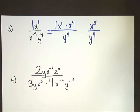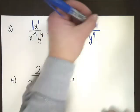I can't do anything if they have different letters, so I'm done. X to the fifth over y to the fourth. It's really a simple problem.